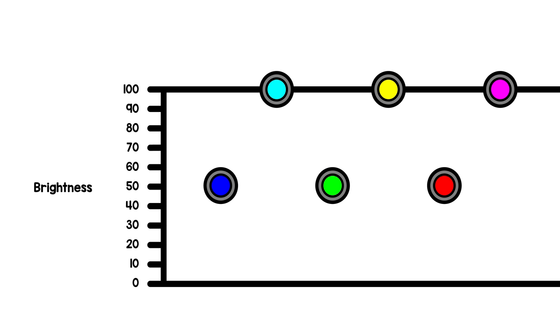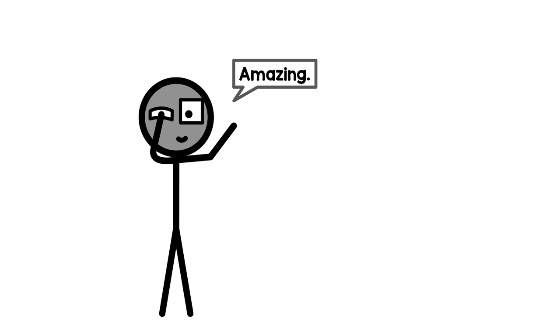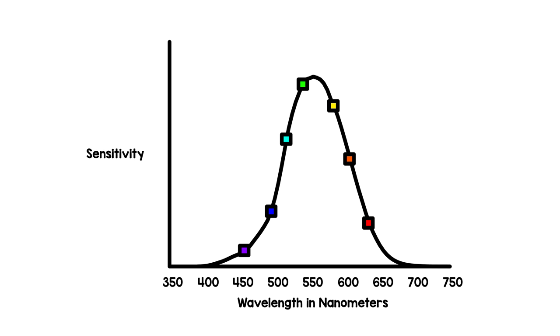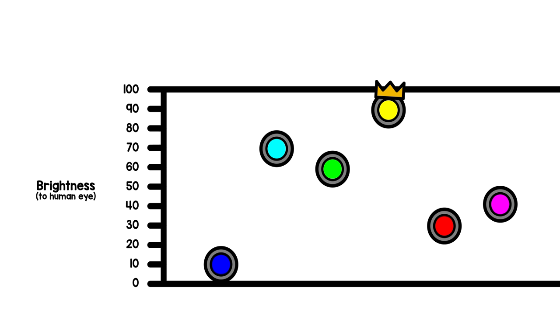Which in theory should share the crown, were it not for the peculiarity of the human eye. Its higher sensitivity to light around 555 nanometers elevates yellow above all others, making it the brightest color an RGB screen can produce.